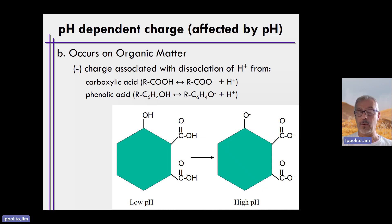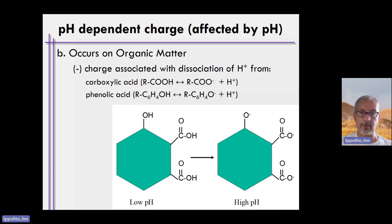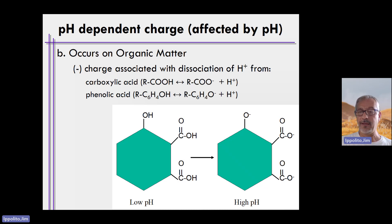This tells you two things: organic materials can become negatively charged as a function of pH, and they can also carry zero charge as a function of pH. The same holds true for the edges of clay minerals and other minerals. In fact, sometimes these compounds can become positively charged, as discussed previously, and that occurs at relatively low pH values.